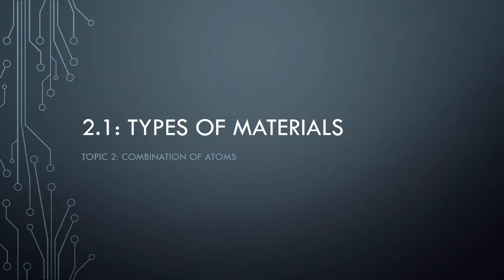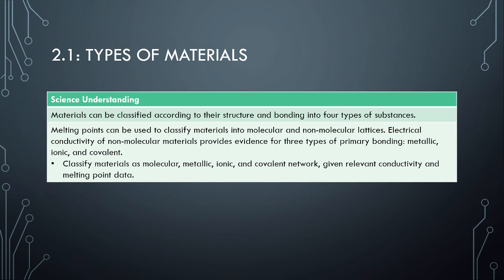Welcome to the third video and the last video of 2.1 types of materials. In this video we'll be looking at the bonding practical that you will do. It's a formative task that would allow you to classify materials as molecular, metallic, ionic and covalent network given relevant conductivity and melting points and vice versa.